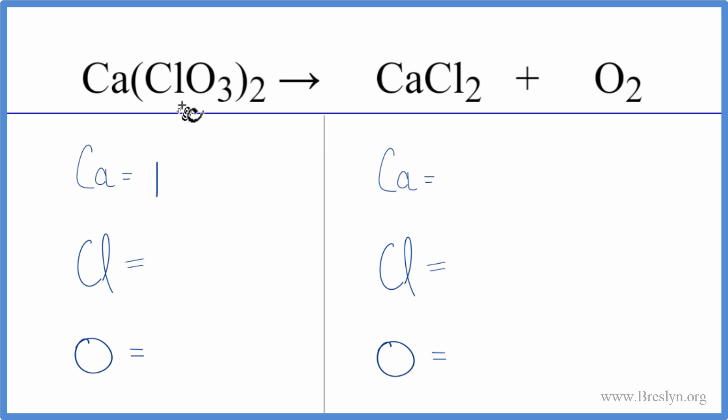We have one calcium, and we have one chlorine, but this two here, it applies to everything in the parentheses. So we have one times two, that gives us two chlorine atoms. Oxygen, three times two, six oxygen atoms.